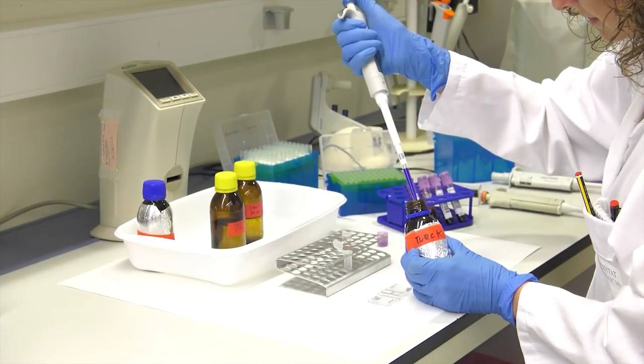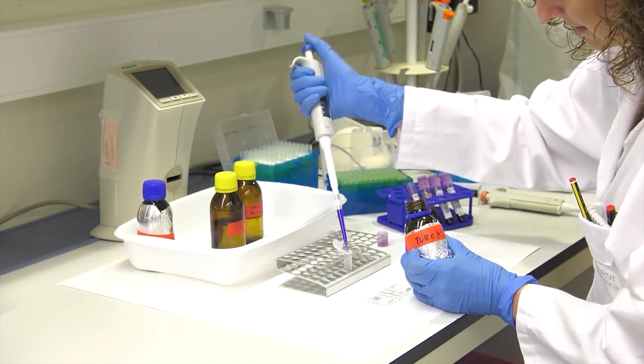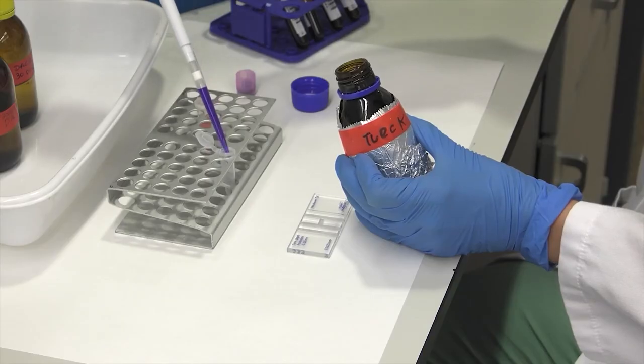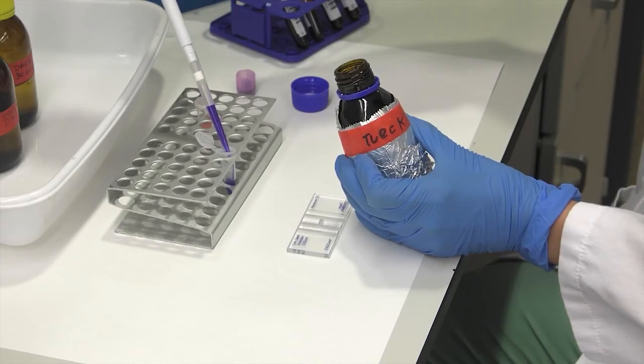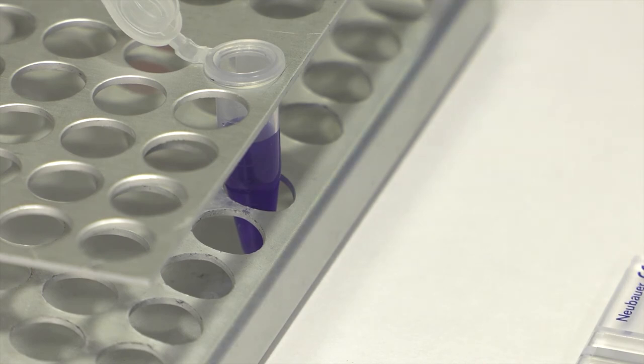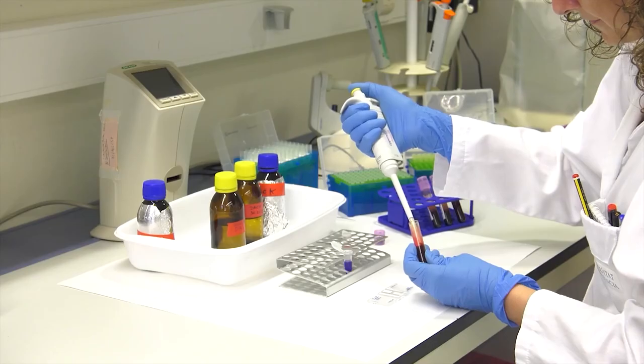The leukocyte count shall be performed in the same way as erythrocyte count. In this case, TURK's reagent is used to dilute the sample. This is a hypotonic liquid containing gentian violet to lightly stain the white blood cells and glacial acetic acid to lyse erythrocytes.